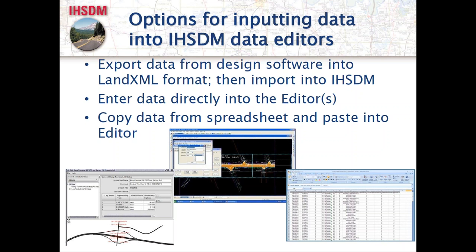You can also enter info manually — either directly into the editor or by building segments in an Excel spreadsheet and copying into the IHSDM editor. Once your project is built, IHSDM performs all the appropriate calculations. Its default is to use SPFs from the Highway Safety Manual and apply the appropriate CMFs based on the design you give it — for example, if your lane width differs from base conditions, it knows to apply the appropriate CMF.